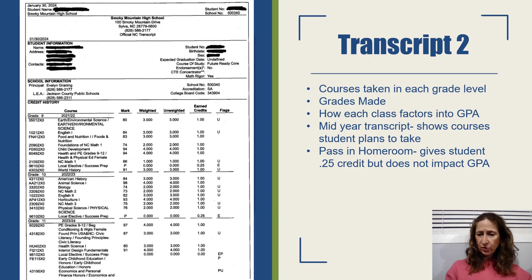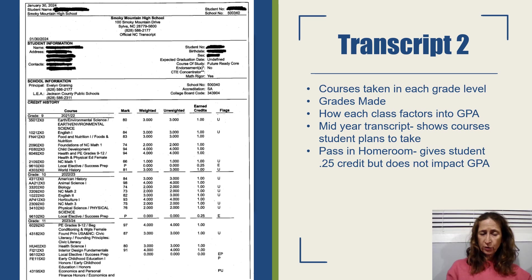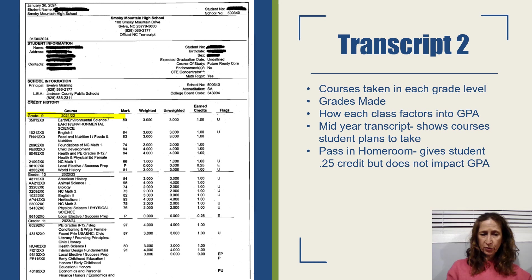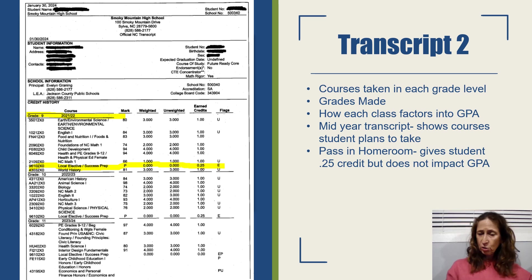This is a different high school transcript from a different student who is a junior in his or her second semester, so we don't have any grades listed yet for the second part of junior year. This student also did not take any high school level classes in eighth grade, so the transcript actually starts with ninth grade classes — which is probably most typical for most students. I also want to point out the local elective 'Success Prep' — that's your homeroom, which is on a pass/fail scale. You don't get any weighted or unweighted points, but you do get a quarter credit.